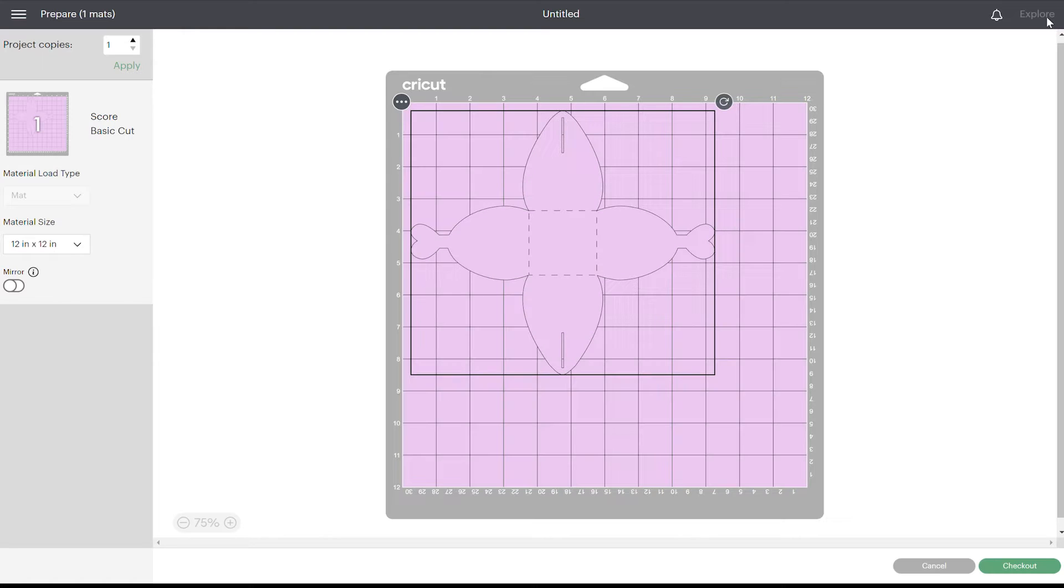When you use a scoring tool, always make sure it looks correct on your cutting mat preview. Because if it doesn't and your score lines are on a different mat, that means that you did not attach them. So you need to go back and make sure they're attached. We're going to go ahead and cut these boxes.